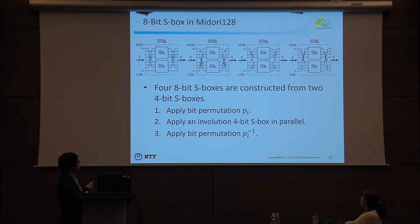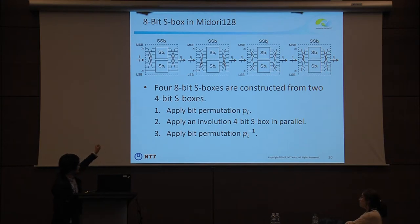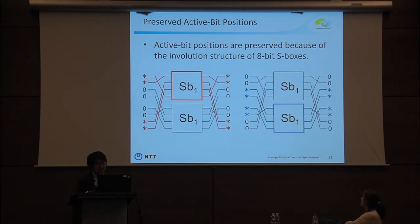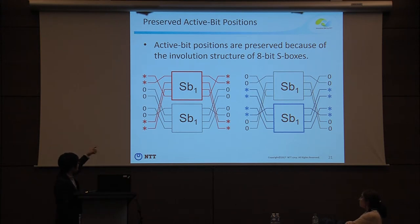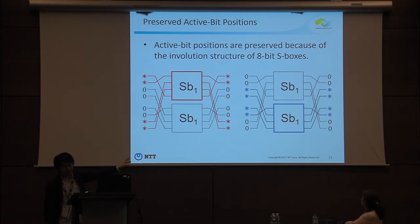Midori-128 has an 8-bit S-box, but this S-box uses a specific structure: we first apply a bit permutation, then apply an involution of 4-bit S-boxes in parallel, then apply the inverse bit permutation. We focus on the S-box called Sb_y. We found this interesting property: if the top two and bottom two bits are active, then only the top Sb1 is active. Since the final permutation is the inverse of the first, the active position is preserved. The right-hand case is completely symmetric, and we exploit this property.